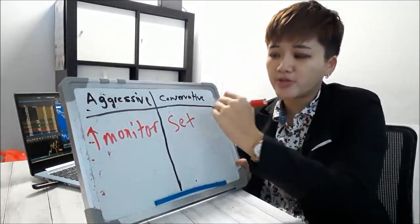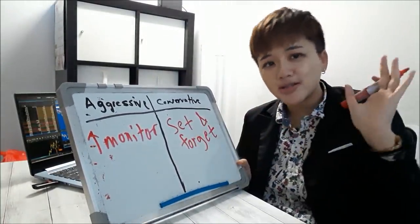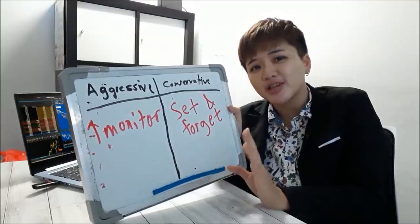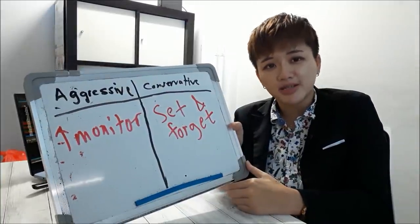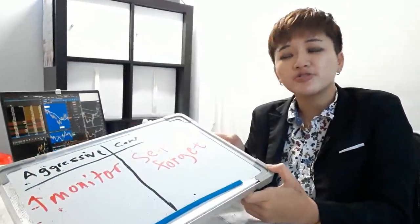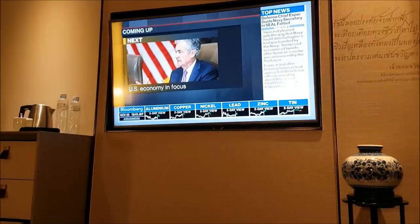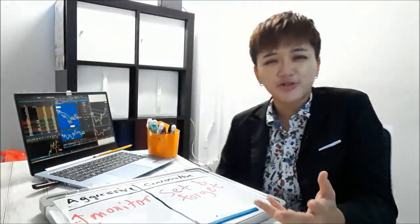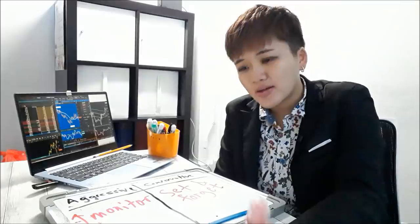A conservative trader sets and forgets — they wouldn't monitor the trade. But should you monitor your trade? Should you look at it all the time, or not at all, or once an hour? There's no right or wrong. If you look at it too much, you're gonna do stupid things. But if there's a sudden unexpected event or a price pattern that forms, you can't completely ignore it. So strike a balance — maybe glance at it once every hour.